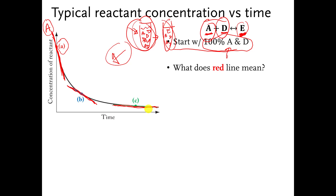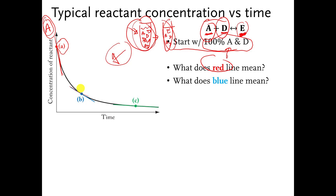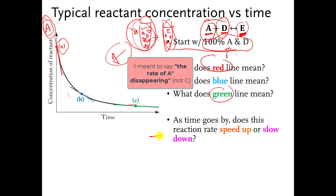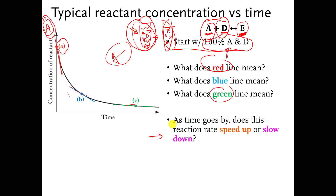So there are a bunch of questions here. What does the red line mean? That's the rate of A disappearing at the very beginning. What does the blue line mean? That's the rate of A disappearing a little while later. What does the green line mean? That's the rate of A disappearing even later than that. The question I'll put to you is: as time goes by, does the reaction speed up or slow down? You can pause the video and think about that for a second.